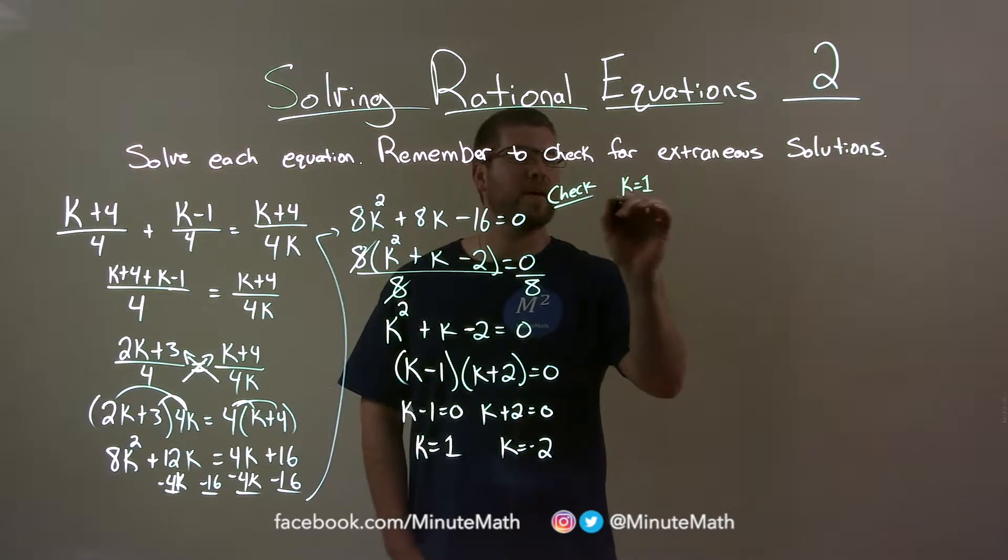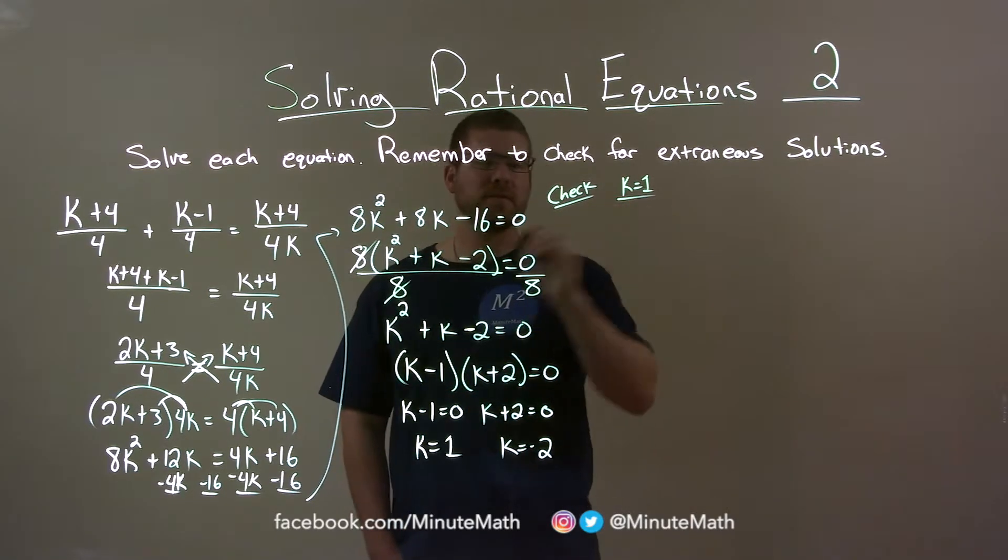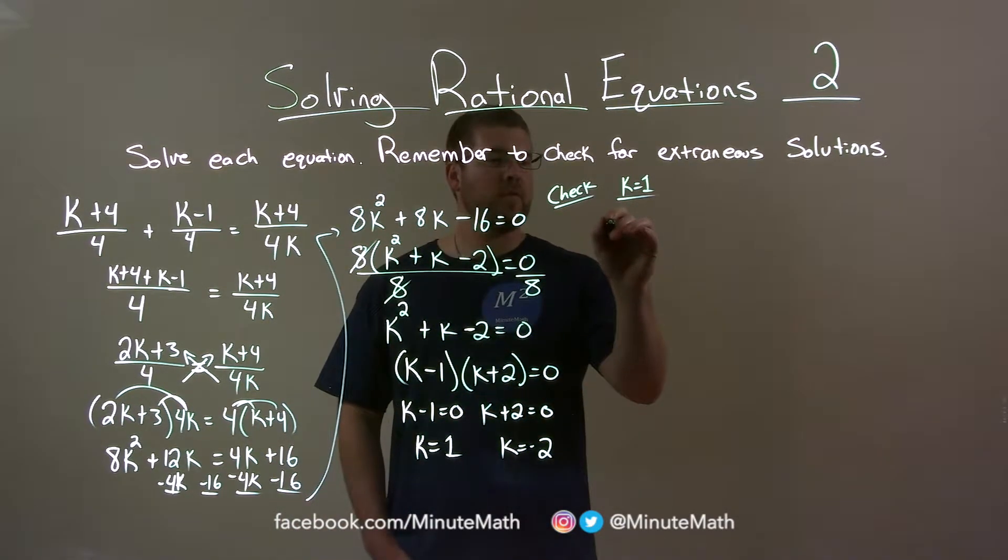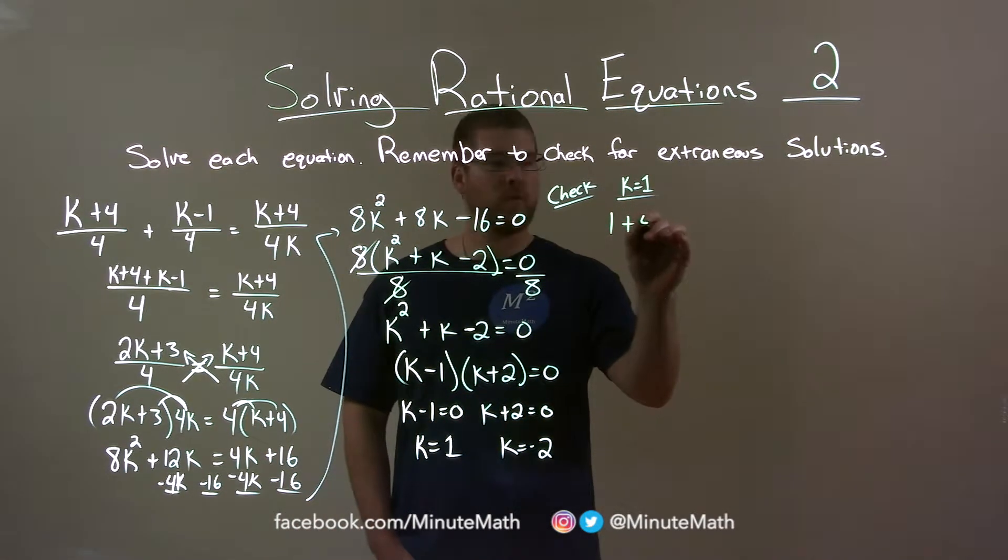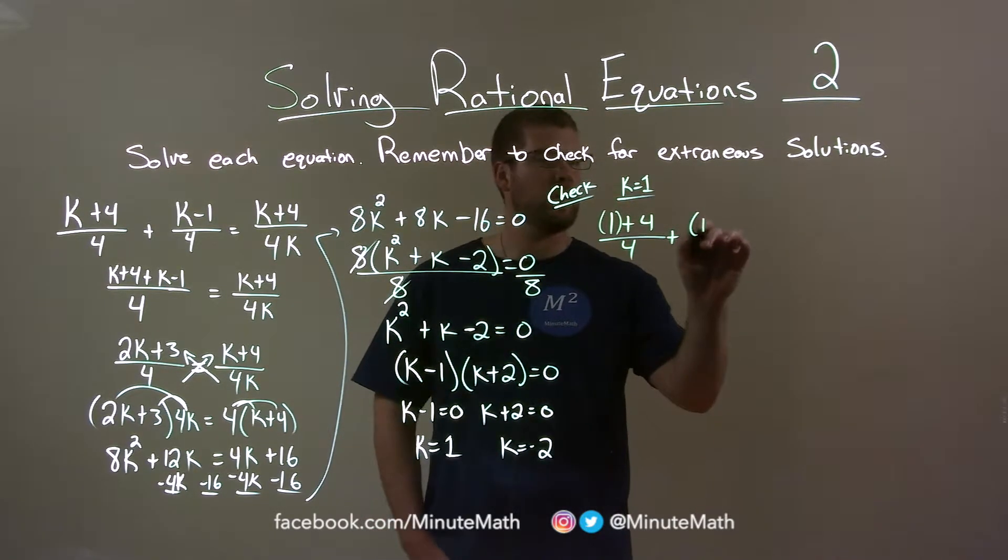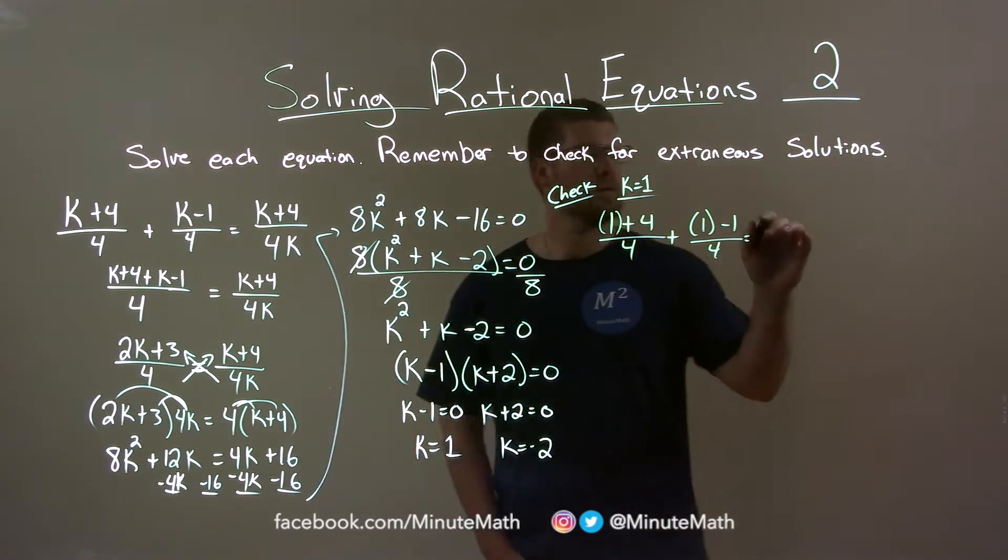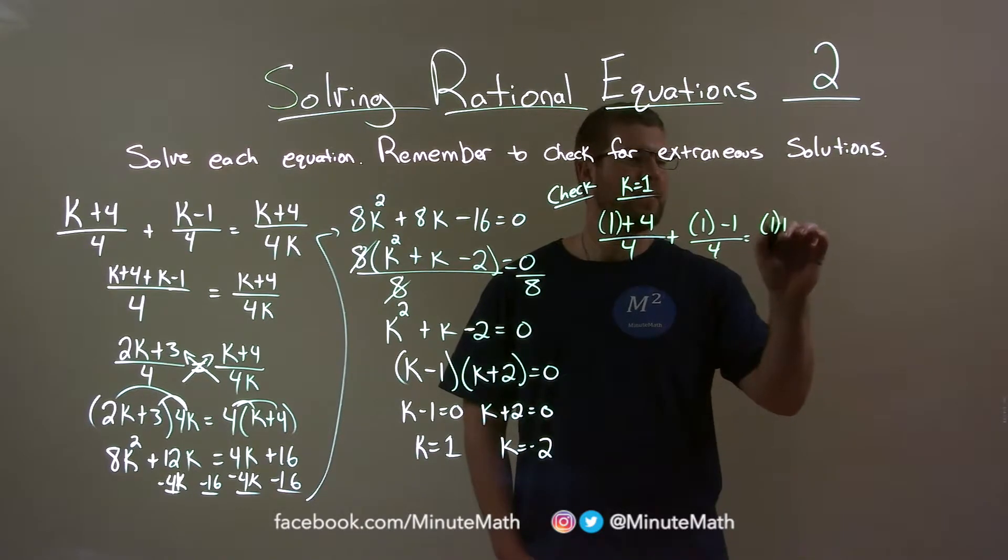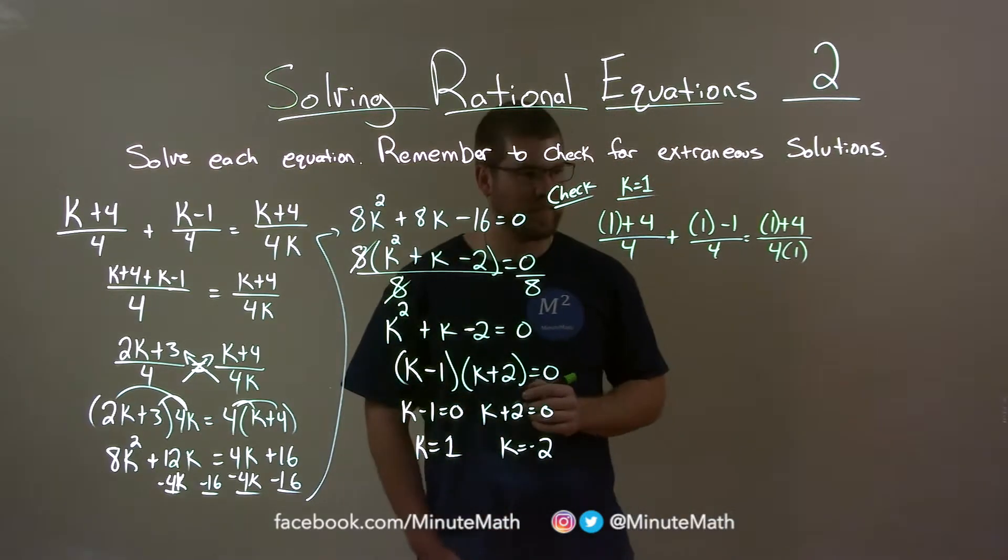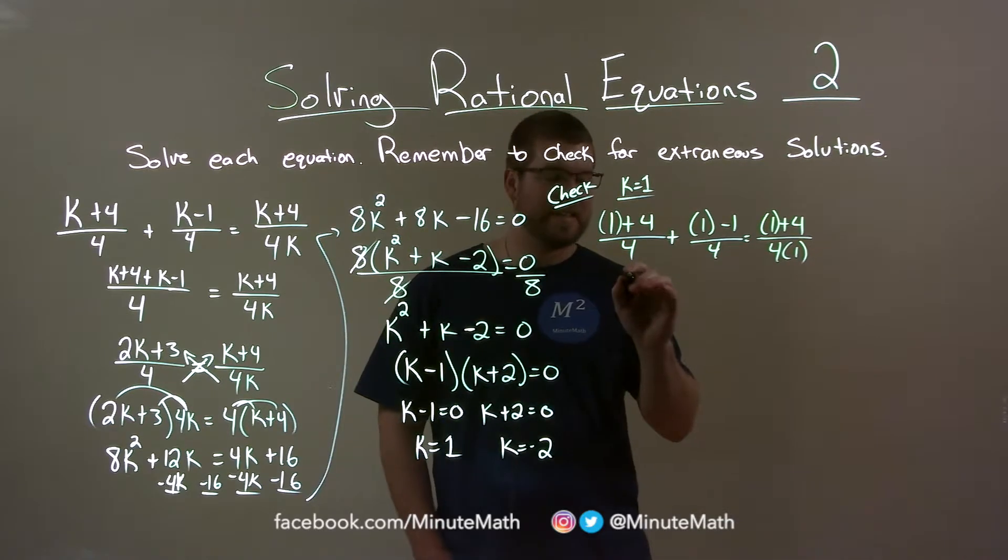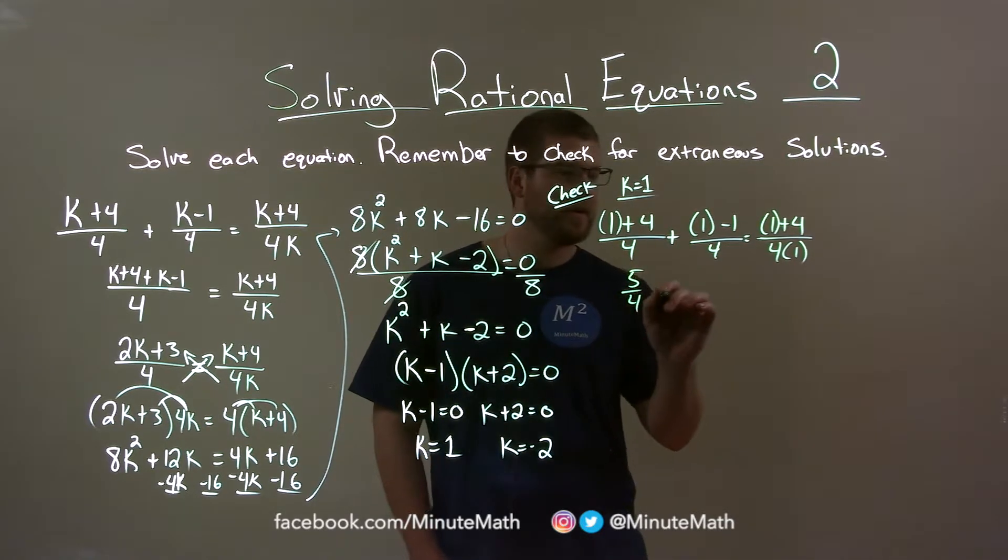k equals 1 here. Every single time we see a k, we're going to put a 1 in for our equation. So we have 1 plus 4 over 4 plus 1 minus 1 over 4. And does that equal 1 plus 4 over 4 times 1? 1's in for all the k's. Simplify. 1 plus 4 is 5. So we have 5 fourths here.